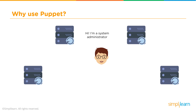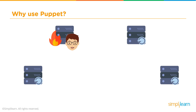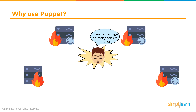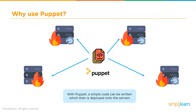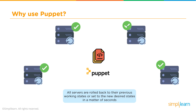So why Puppet? Here is a scenario that as an administrator you may already be familiar with. You have multiple servers that you have to work with and manage. What happens when a server goes down? It's not a problem — you can jump onto that server and fix it. But what if multiple servers go down? With Puppet, all you have to do is write a simple script in Ruby and deploy your settings to those servers. The code gets pushed out and you can choose to either roll back to a previous working state or set them to a new state — all in a matter of seconds.